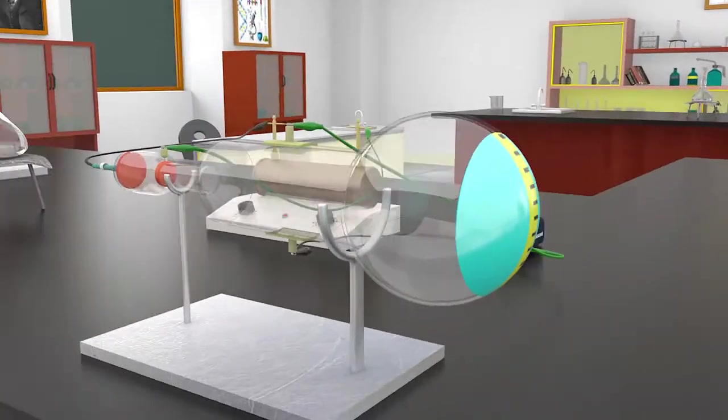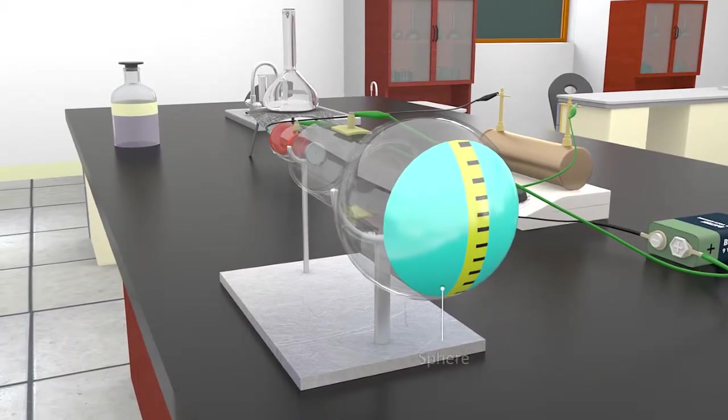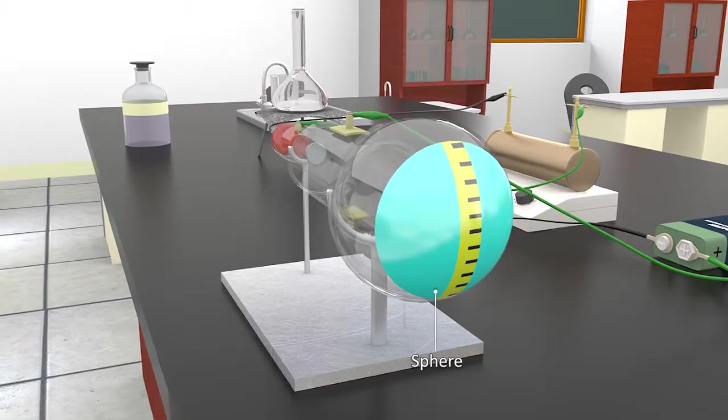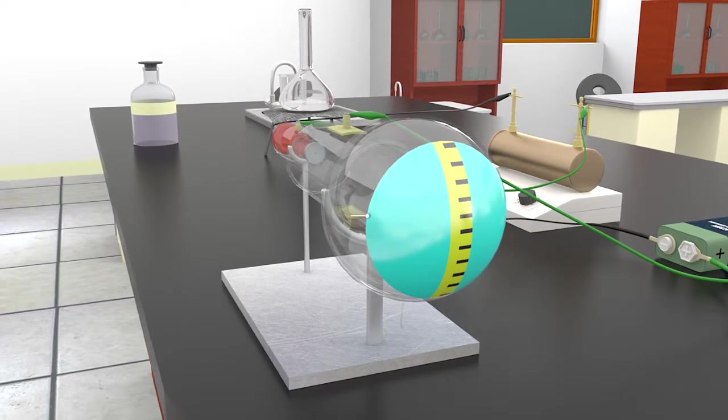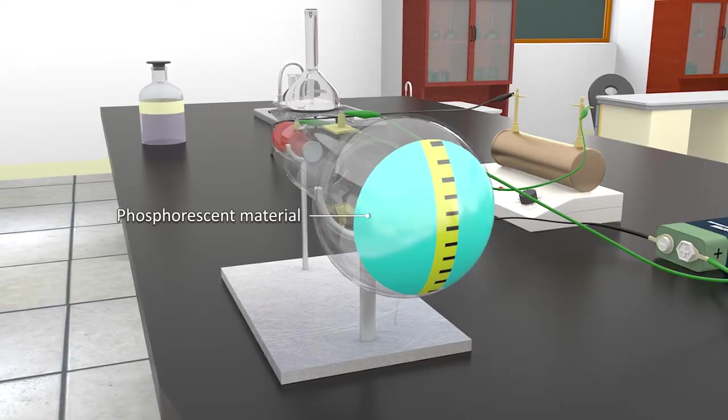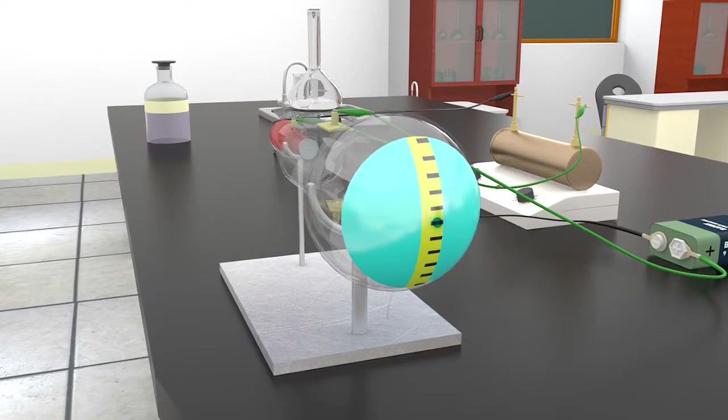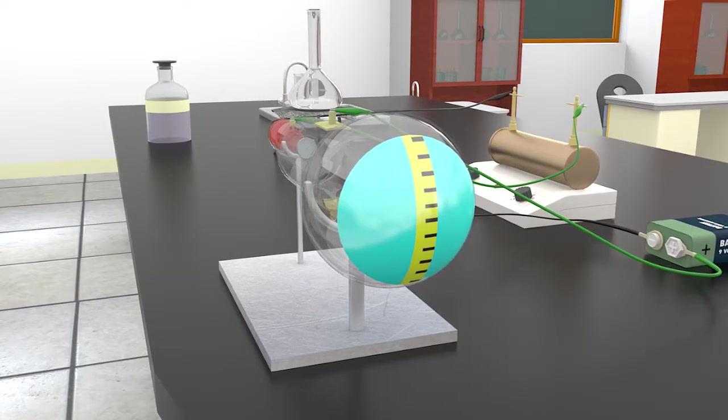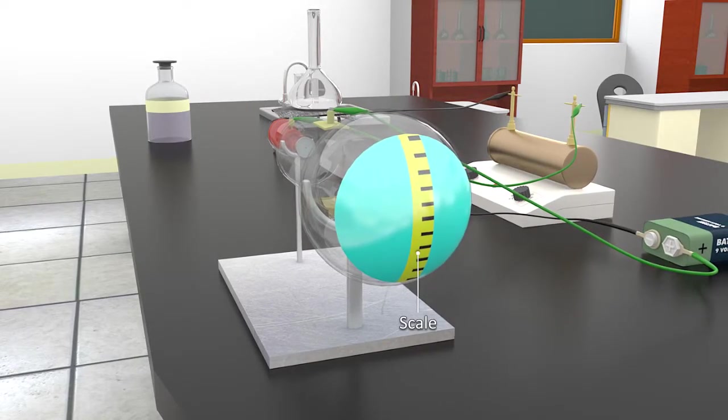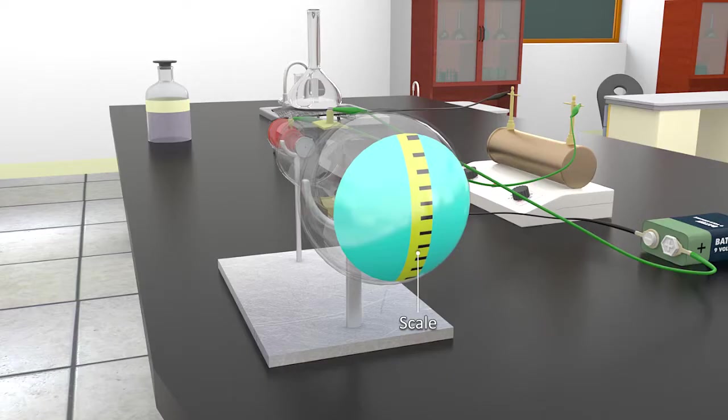At the end of the tube was a large sphere, coated with a phosphorescent material, so that any beam after striking it would leave behind a mark on it. It was also provided with a scale to measure the deflection.